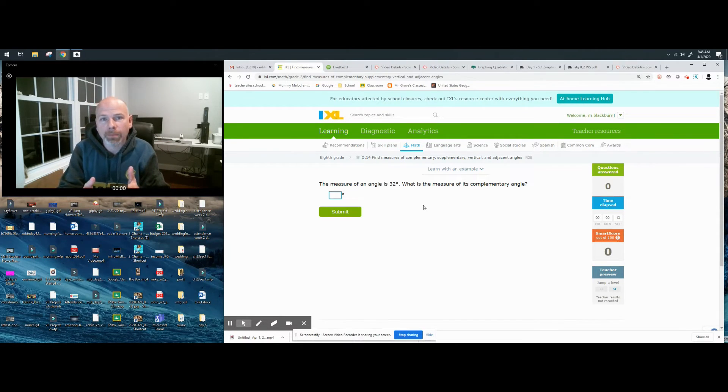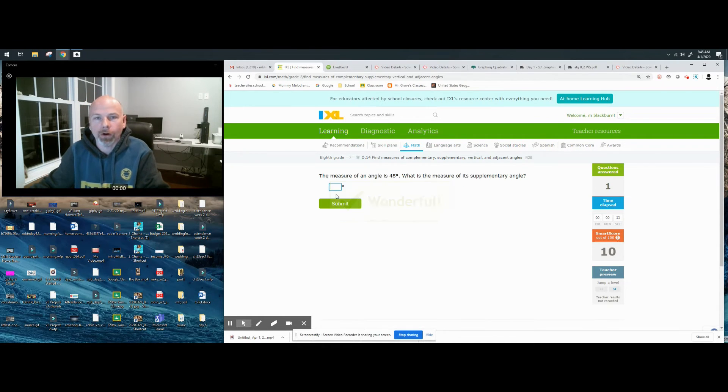Here we go. The measure of an angle is 32 degrees. What is the measure of its complementary angle? So we just said complementary angles are two angles that add to 90. So 32 plus what equals 90, or 90 minus 32 equals X. That's how you might want to think about this. So I'm seeing maybe 58. Sounds right to me. Oh yeah!